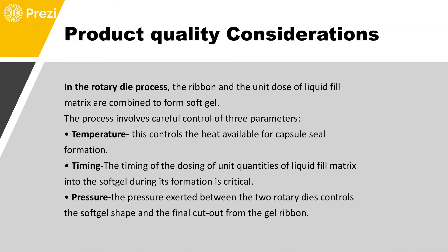In the rotary die process, the ribbon and the unit dose of the liquid fill matrix are combined to form the soft gelatin capsule. Three specific controls are required. First, temperature — this controls the heat available for capsule sealing and formation. Second, timing — the timing of dosing the unit quantities of liquid fill matrix into soft gelatin during formation is critical. Third, pressure — the pressure exerted between the two rotary dies controls the soft gel shape and the final cut from the gel ribbon. More pressure compresses it; less pressure gives a more spherical shape.